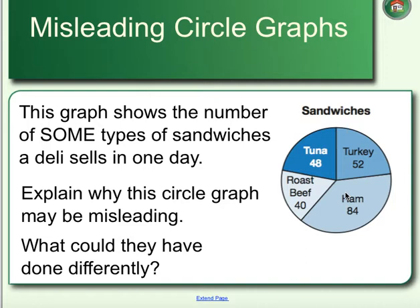We should be seeing percentages when we're talking about circle graphs. It's misleading because 48 sounds like a pretty good amount of tuna, when really it's probably maybe a fifth of what they sell in a day. They should put percentages in here, make sure the pieces of the pie are actually correct, and show all of the sandwiches — even those that may not sell as well.